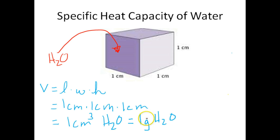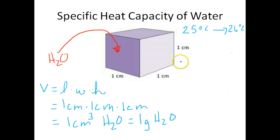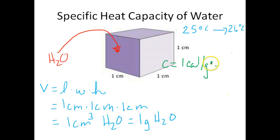So I've got one gram of water here, and what we want to do is raise its temperature from 25 degrees Celsius to 26 degrees Celsius — a temperature change of just one degree Celsius. How much thermal energy do you think this one gram of water is going to need in order to raise its temperature one degree Celsius from 25 to 26 degrees? Well, the answer is quite simple: it's one calorie. The specific heat capacity of water is one calorie per gram degree Celsius, meaning if you've got one gram of water and you want to raise its temperature one degree Celsius, it will require one calorie of energy.